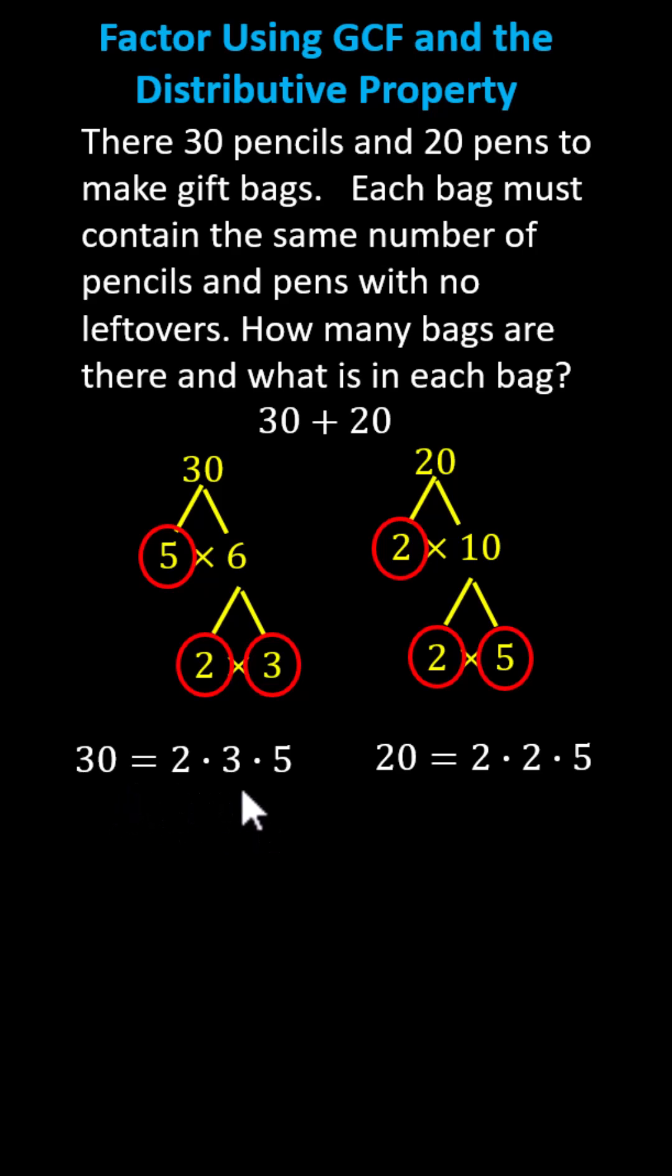To identify the greatest common factor, we circle the prime factors in common between 30 and 20. Notice 30 and 20 have one factor of 2 in common and one factor of 5 in common. This indicates the greatest common factor of 30 and 20 is 2 times 5, which is 10.